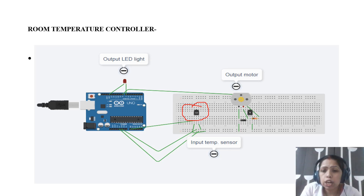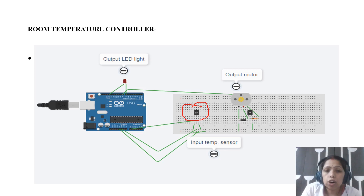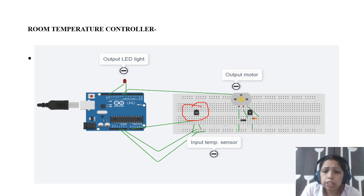If the temperature is, suppose, 34 or 30 degrees, then the Arduino will automatically give a warning signal — the fan should be turned on. The warning signal will be sent by the LED, and at the same time the DC motor, acting as the fan, will be turned on.